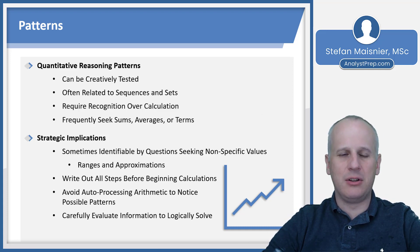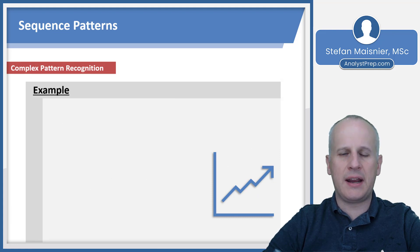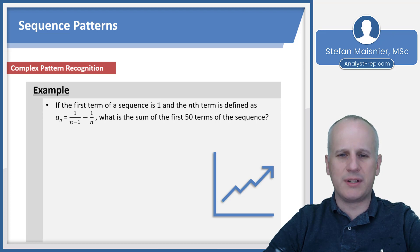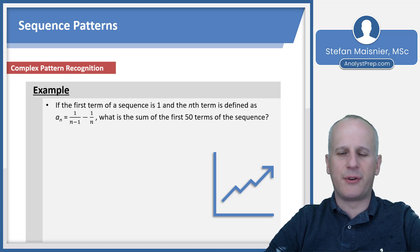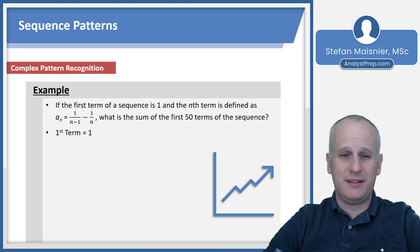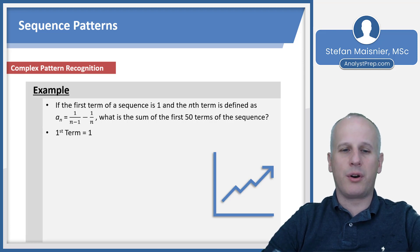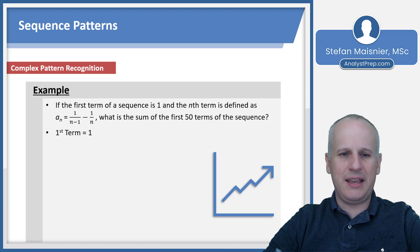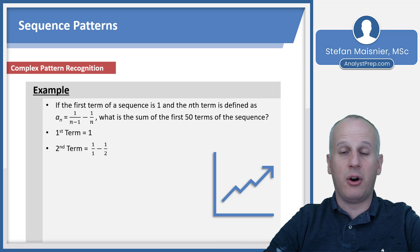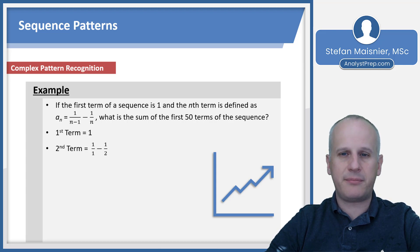Let's take a look at how pattern recognition plays out in an arithmetic sequence. If the first term of a sequence is 1 and the nth term is defined as a_n equals 1 over (n minus 1) minus 1 over n, what is the sum of the first 50 terms? We start by writing out the first term, which is 1. Then our second term, a_2, is 1 over (2 minus 1) minus 1 over 2, or 1 over 1 minus 1 over 2. Write it out like that — don't simplify to one-half, or you'll have to process all the common denominators and miss the emerging pattern.